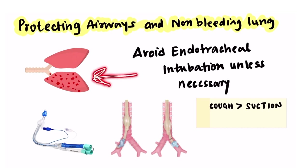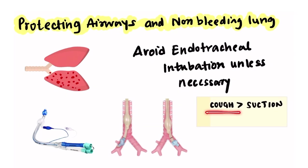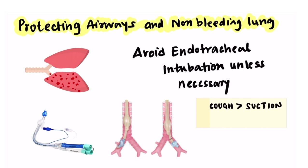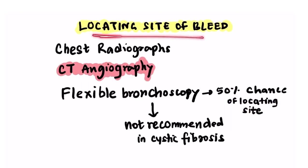We should avoid endotracheal intubation unless absolutely necessary, because cough — a natural reflex — is more effective at removing blood and clots than suctioning. If endotracheal intubation is required, we have two options: a double-lumen endotracheal tube, or single-lung ventilation to ventilate the non-bleeding lung. For locating the site of bleeding, chest radiographs can be helpful, but CT angiography is the investigation of choice, providing accurate site identification.